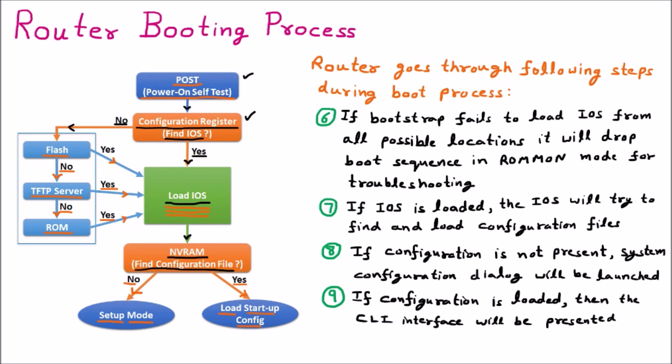To summarize the router booting process: first, POST checks all hardware and software components. Then the configuration register is checked to determine if IOS is present — if yes, it is loaded; if not, the router enters ROM monitor mode and checks flash, TFTP server, and ROM. Once IOS is loaded, NVRAM is checked for the configuration file — if present, the router starts normally; if not, setup mode is launched.